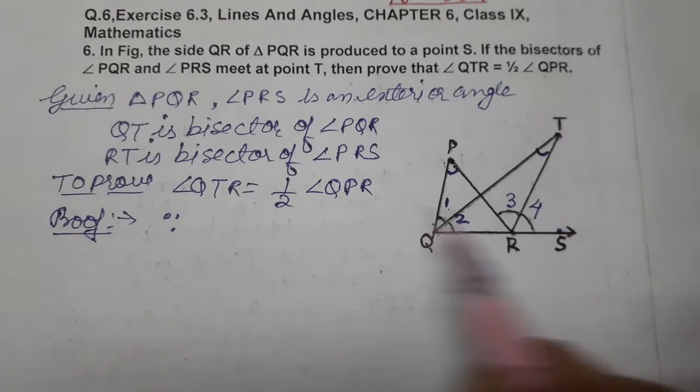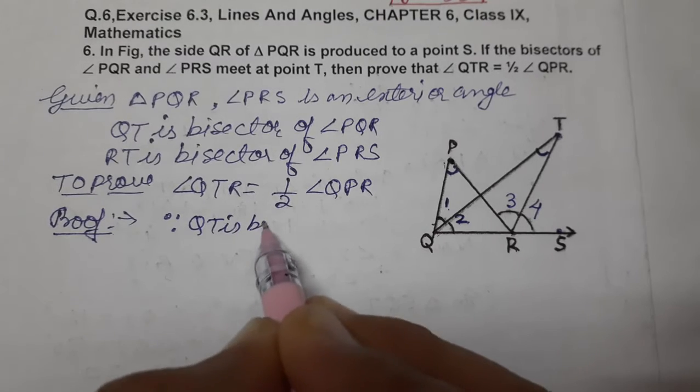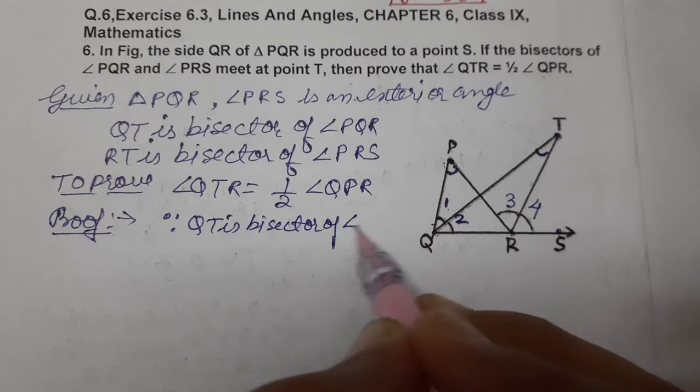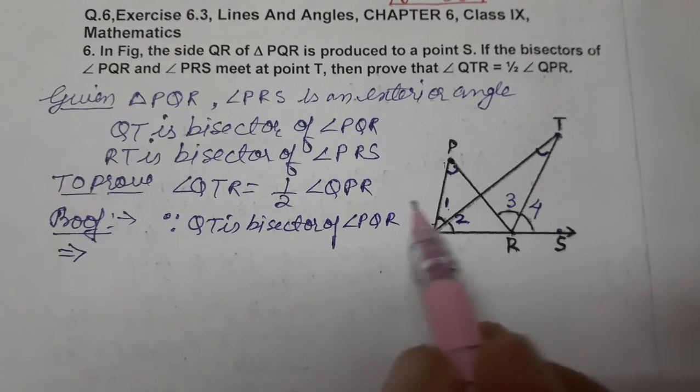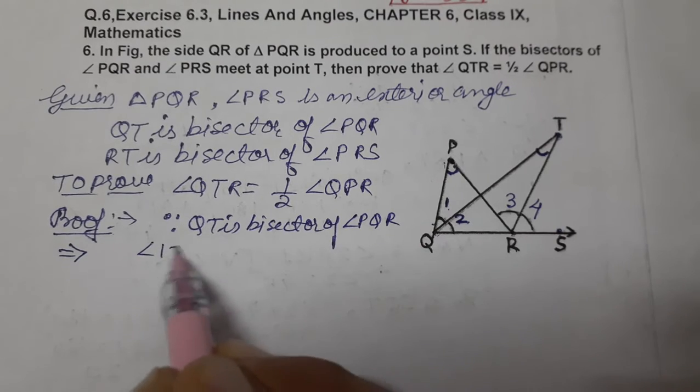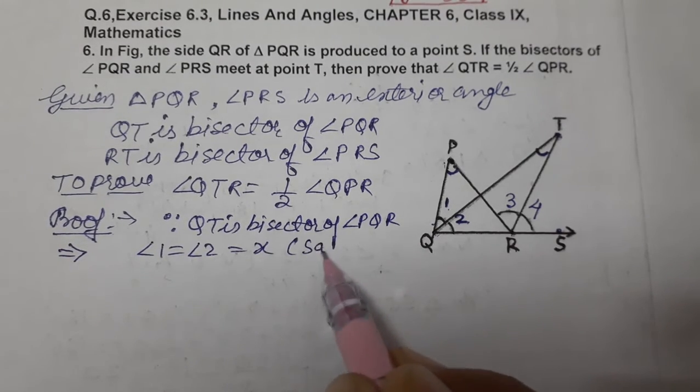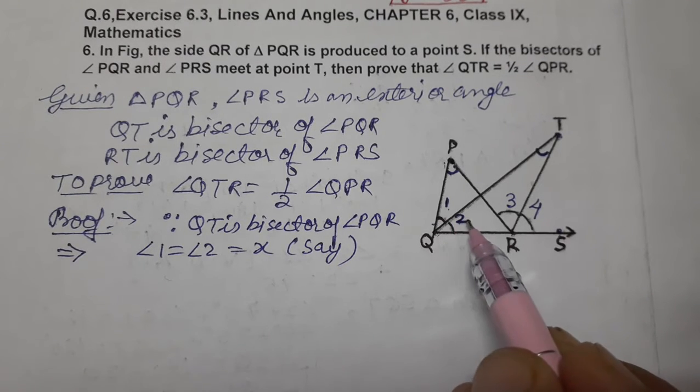Since QT is bisector of angle PQR, this results in angle 1 equals angle 2 equals x. We have assumed this - that both angles are equal, so we call both x because both angles are equal due to the bisector.